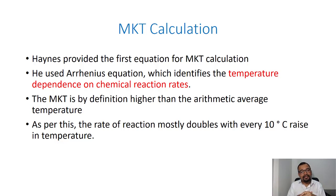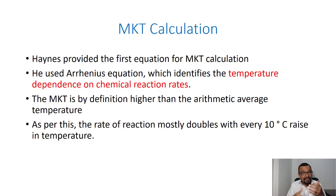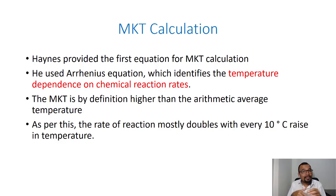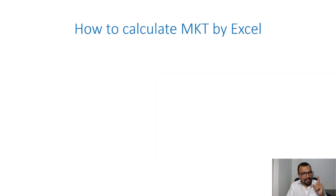As per this, the rate of reaction mostly doubles with every 10 degrees Celsius rise in temperature. That means if you get a degradation rate of 10% at 20 degrees Celsius, and you increase the temperature to 30 degrees Celsius, the degradation rate must increase from 10% to 20% — which is double — just by increasing the temperature by 10 degrees Celsius. Now let us begin with how to calculate the mean kinetic temperature using a simple Excel sheet.